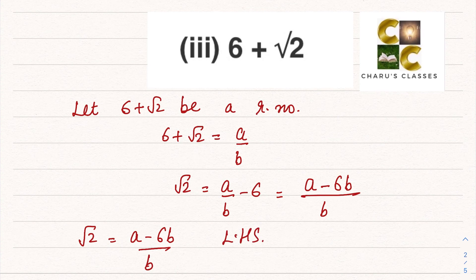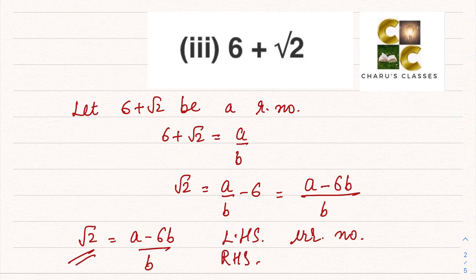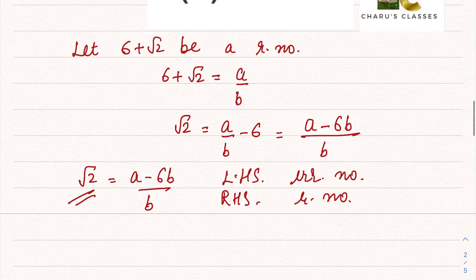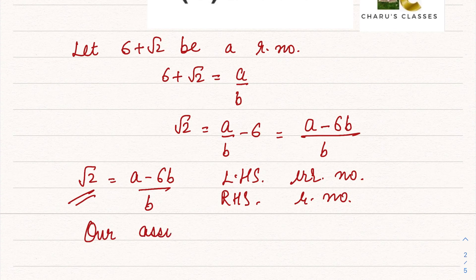The left hand side is root 2, which is an irrational number, and the right hand side, a minus 6b by b, is definitely a rational number. It is not possible that the left hand side equals the right hand side, so our assumption was wrong, and 6 plus root 2 is an irrational number.